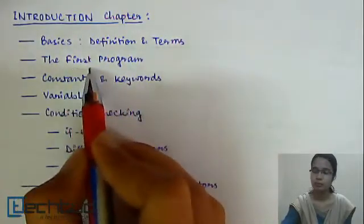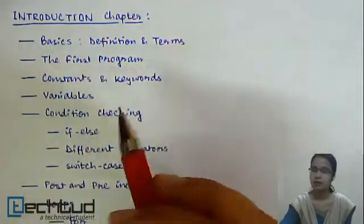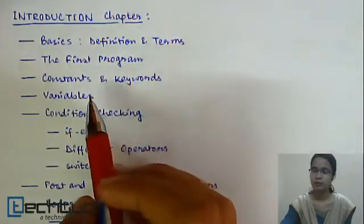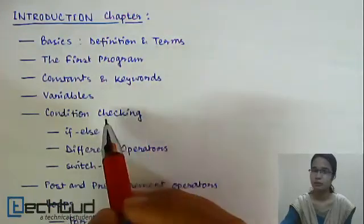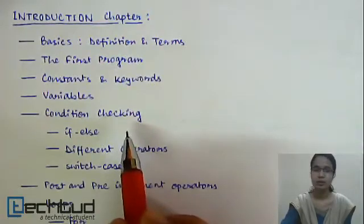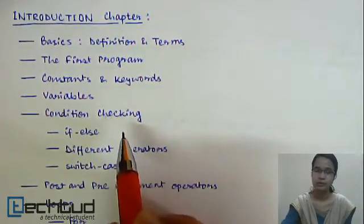We'll learn how to write and execute a basic program in C language. Then we will dive into the different elements of a programming language - that is constants, keywords, and variables. After that, we will learn about condition checking. In this section, we will cover if-else.